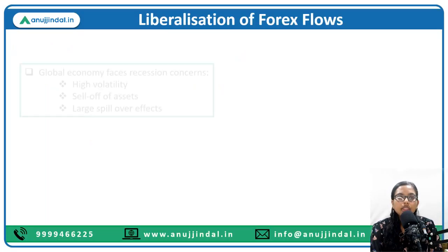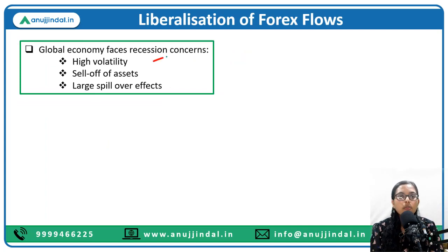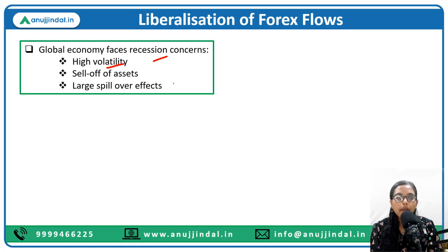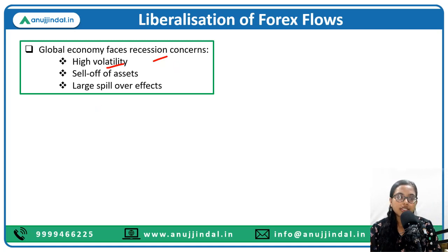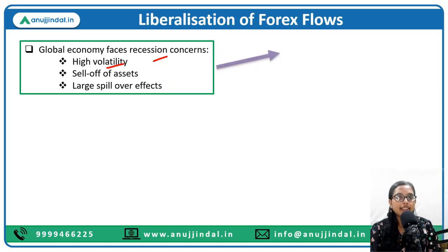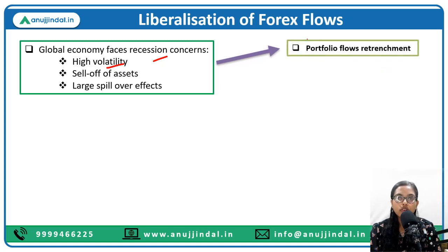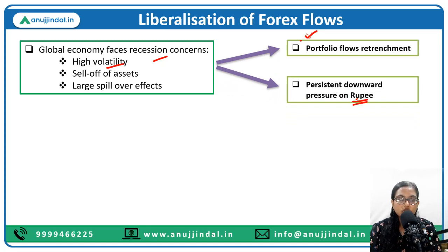As we all know, the global economy has been facing problems of recession as well as stagflation. This can be seen from signs such as high volatility in prices, sell-off of assets, and large spillover effects, whereby there has been a huge exodus of capital — capital flights from emerging countries to safe-haven countries where the currency is more stable. FPIs are trying to invest in safe-haven countries, resulting in two major effects: retrenchment in portfolio flows and persistent downward pressure on currencies of emerging market economies.